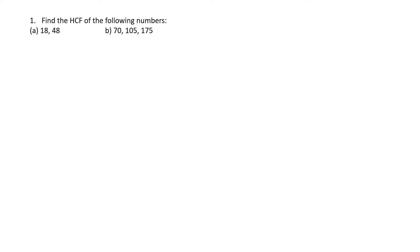The first question is: find the HCF of 18 and 48. For 18, let us list the factors. We check each number: 1 and 18, then 2 and 9, then 3 and 6. 4 does not go — 4 fours are 16. 5 does not go — 5 fives are 20. And 6 is already listed. So all the factors of 18 are: 1, 2, 3, 6, 9, and 18.